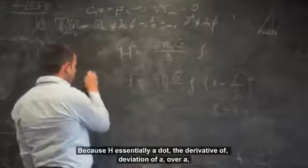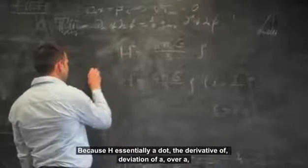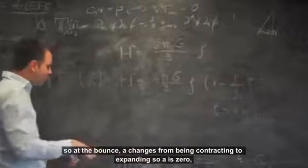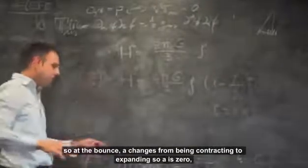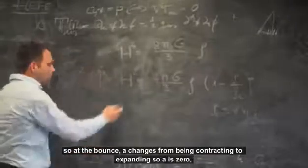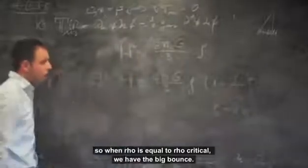Because h is essentially a dot, the derivative of a, the variation of a over a. So at the bounce, a changes from contracting to expanding, so a dot is zero. And when rho equals rho critical, we have the big bounce.